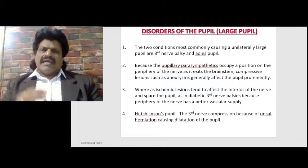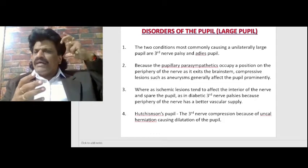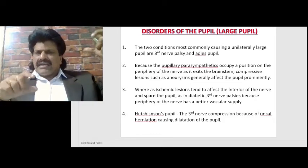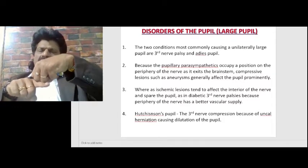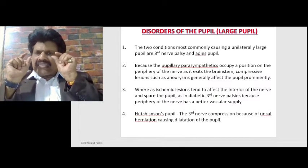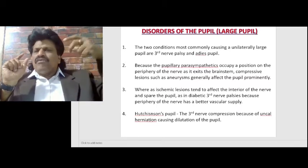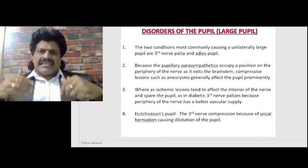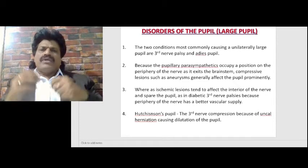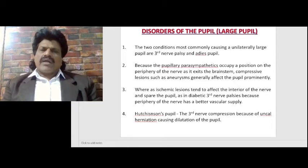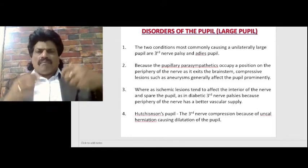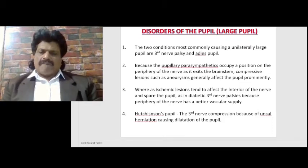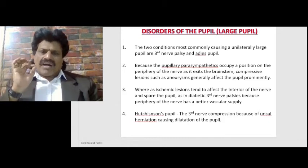Hutchinson's pupil refers to third nerve compression due to uncal herniation causing dilatation of the pupil. A person who has sustained a head injury may develop a hematoma that starts expanding, causing uncal herniation, which compresses the parasympathetic fibers on the third nerve. Therefore, the pupil on that side cannot constrict and starts dilating. This ipsilateral dilatation is called Hutchinson's pupil and is a warning sign of impending brainstem compression requiring urgent CT scan and neurosurgical evacuation of the hematoma.